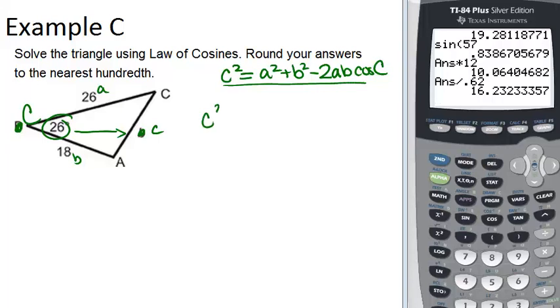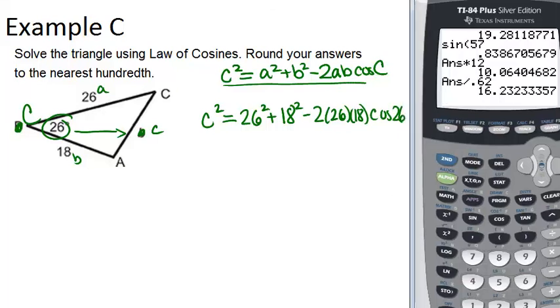So now we have C squared, which is what we're solving for, equals 26 squared plus 18 squared minus 2 times 26 times 18, and then cosine 26. So now we need to do a lot of calculations to simplify this. 26 squared is 676.